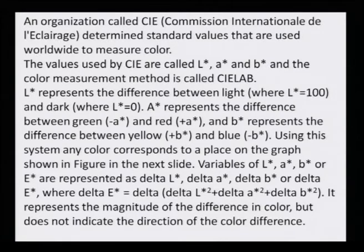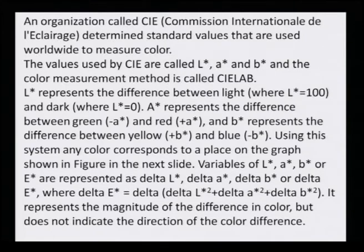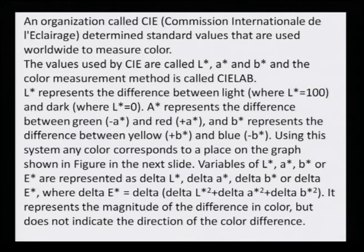Using this system, any color corresponds to a place on the coordinate graph. Variables of A*, B*, and L* are represented by delta L, delta A and delta B. Delta means any change from the initial situation — if L has changed, how much it has changed is represented by delta L. It represents the magnitude of difference in color but does not indicate the direction of the color difference.